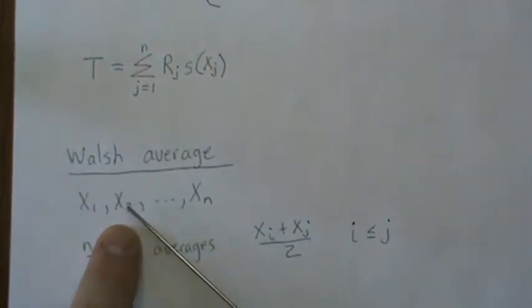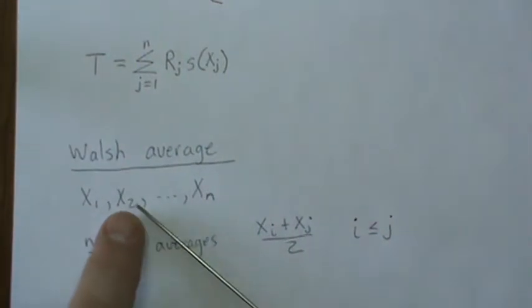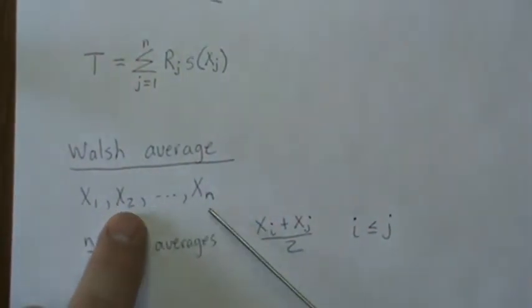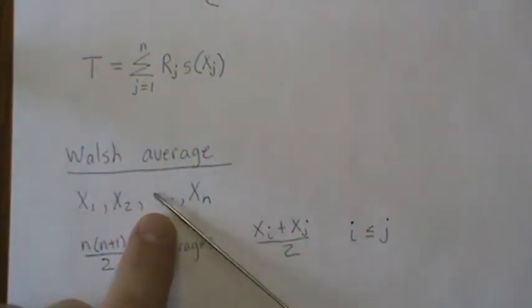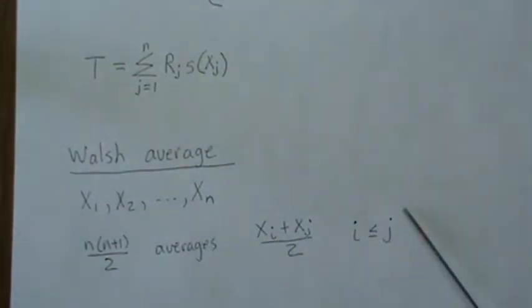Now we don't take the average of two and one because that's the same as one and two. So we start here, then we take the averages with everything else, then we start at three and take the averages.